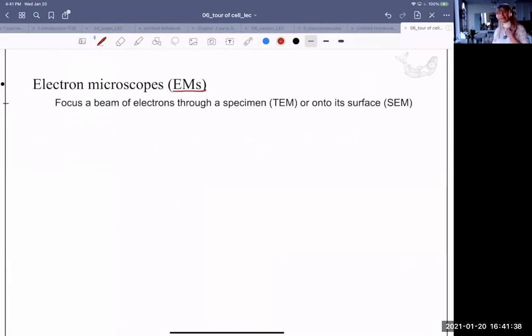Electron microscopes are different. So they're using not light, but electrons. Electrons that either go through a specimen and transmission electron microscopy or gather onto the surface. Scanning electron microscopy. What does that look like?